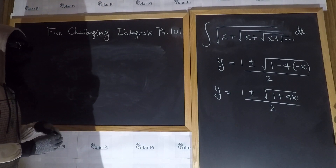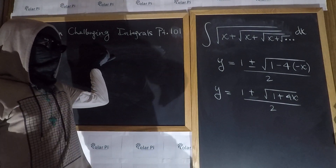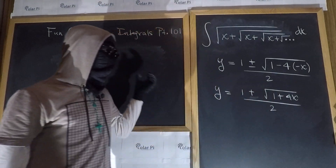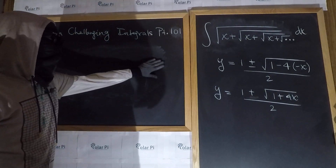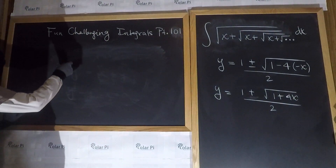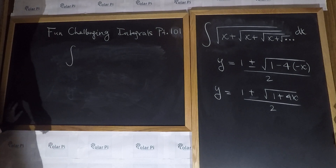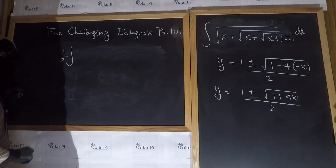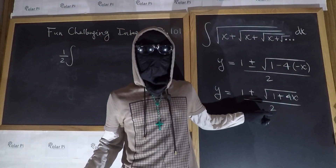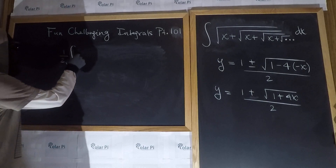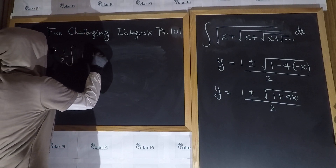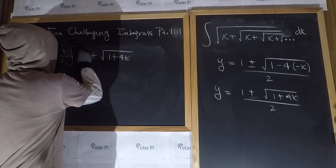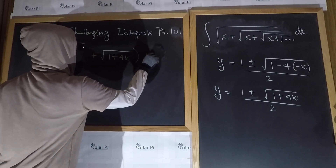So integrating y — the expression we just derived — is the same as integrating the simplified form, because we got y from that expression. So the integral we had to start is now the same as the integral of one-half times 1 plus the square root of 1 plus 4x, dx.